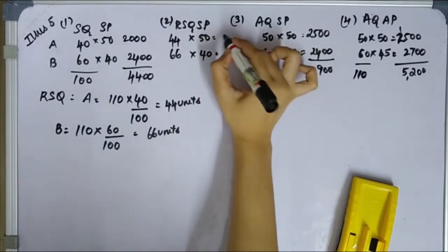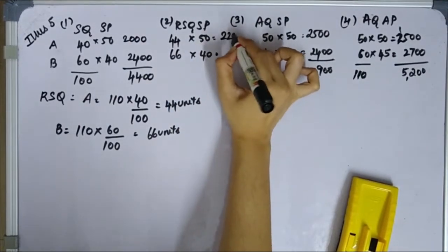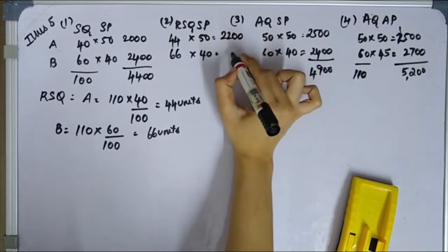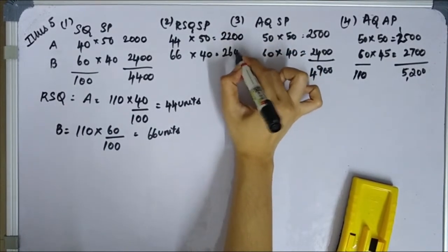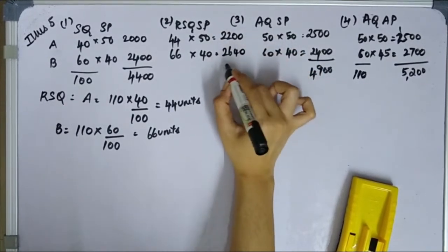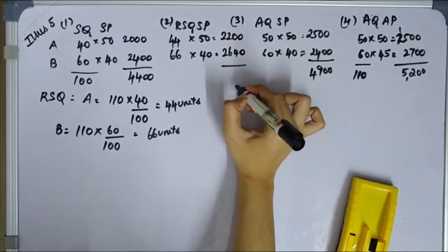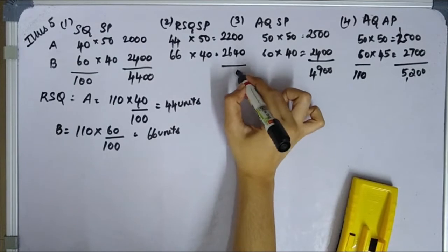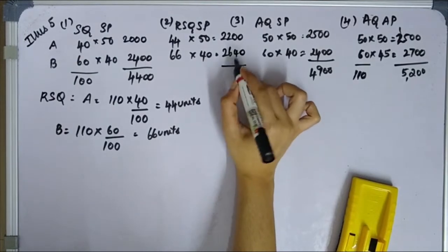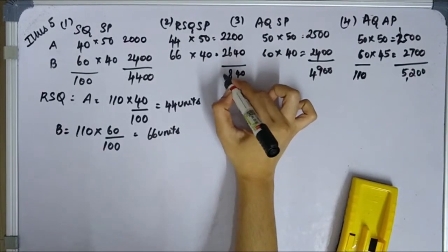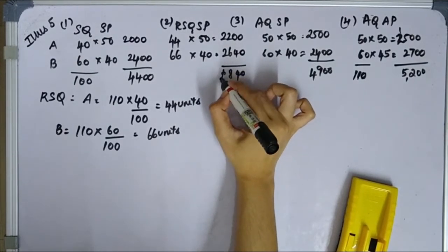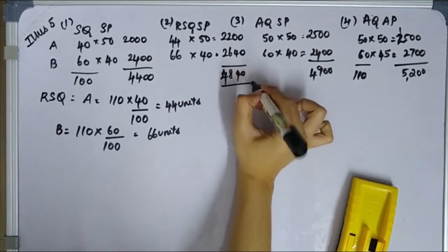Using RSQ values: A gives 44 × 50 = 2,200 and B gives 66 × 40 = 2,640. Total RSQ×SP = 4,840.